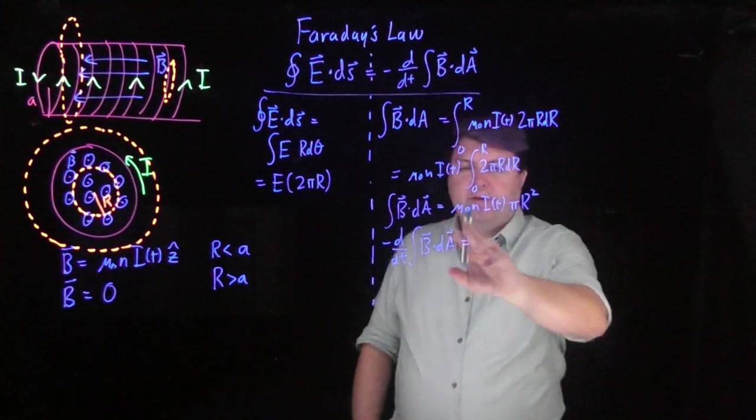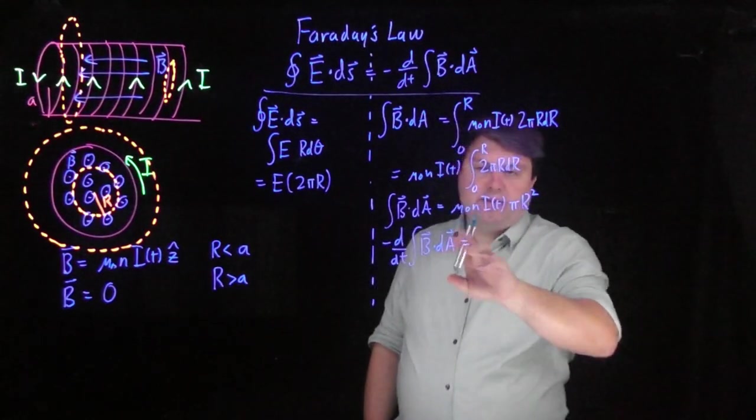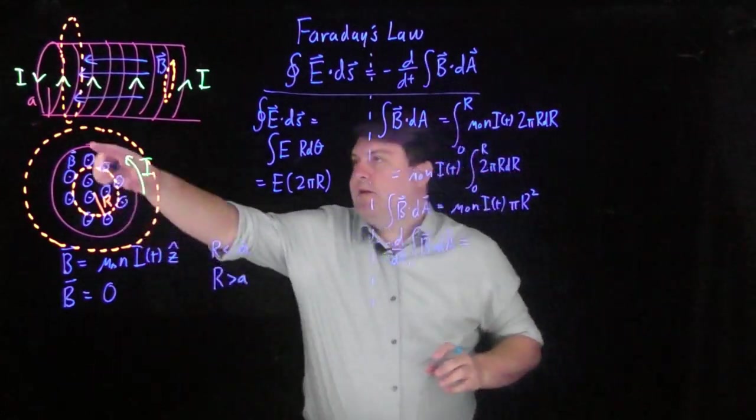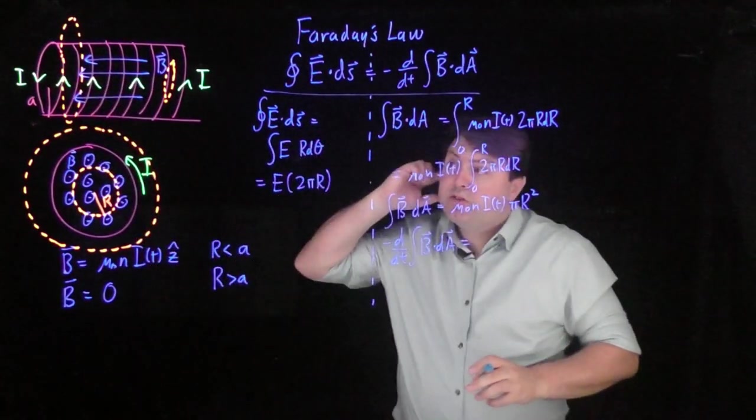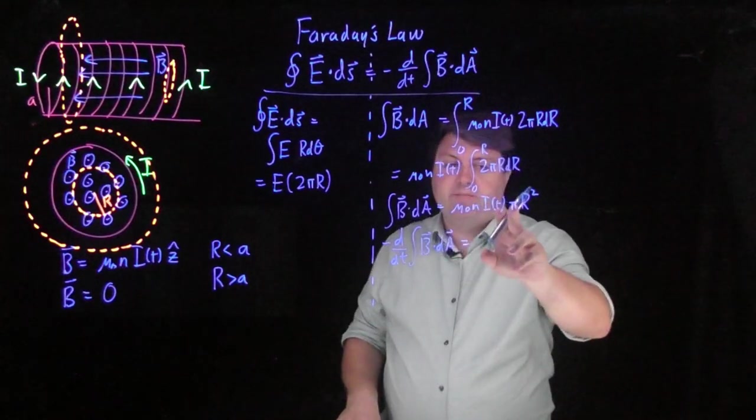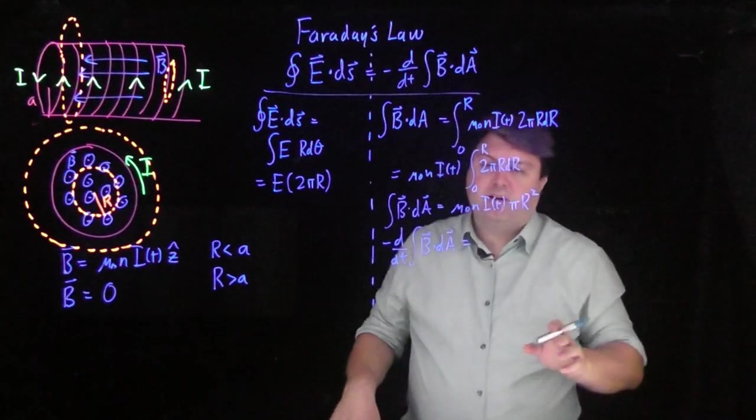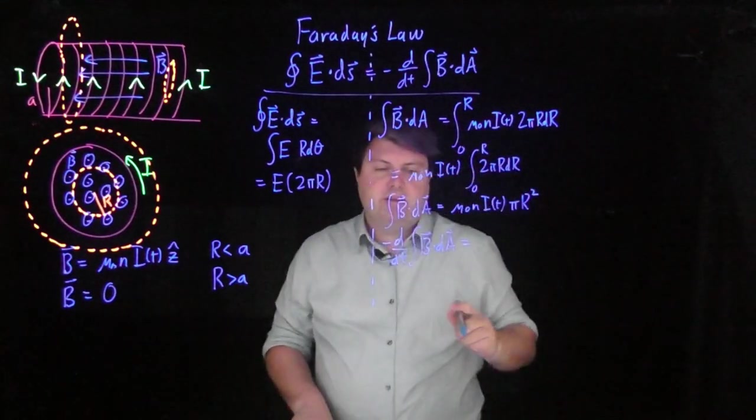If mu naught is a constant, that's not going to change with time. n is the number of turns in our solenoid, the turn density, actually. That's not going to change with time. Pi and the radius of our solenoid are not going to change with time. It's just this i of t that's going to change with time.